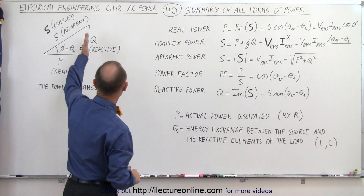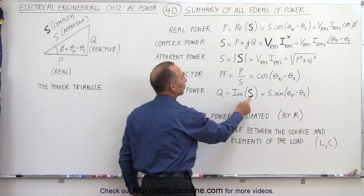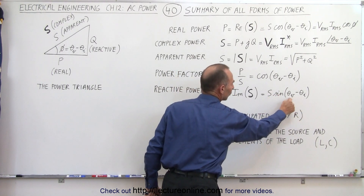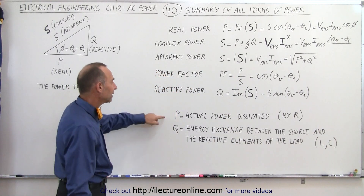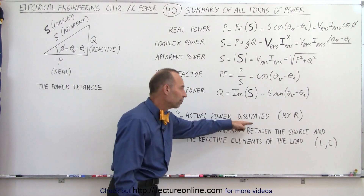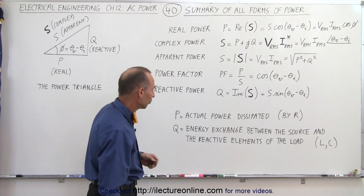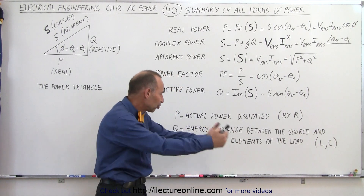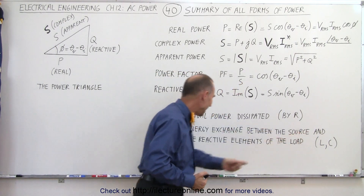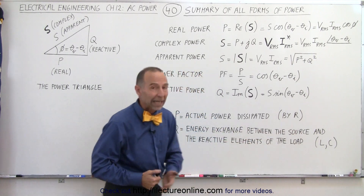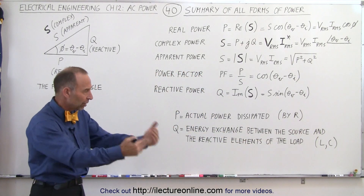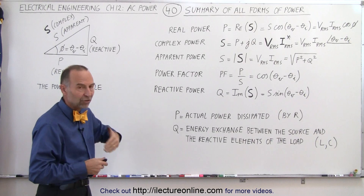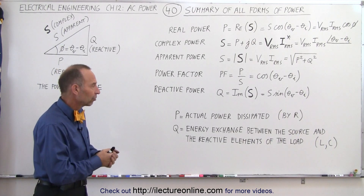The reactive power, on the vertical imaginary axis, is the imaginary part of the complex power, which is the magnitude of the complex power times the sine of the difference of the angles of the voltage and the current. P stands for the actual power dissipated by the resistor in the circuit. Q is the energy exchange — not really lost power, but the exchange of energy between the source and the reactive elements of the load, the inductors and the capacitors — a constant feeding back and forth between the inductor, the capacitor, and the source, where the real power is the power actually dissipated as the circuit operates.